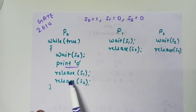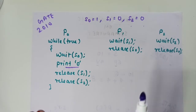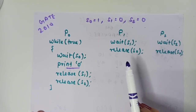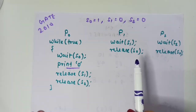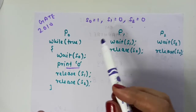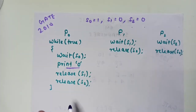P0 will print one time, then release S1, release S2. So how many times will it print? We need to check the answer. Let's take an order.